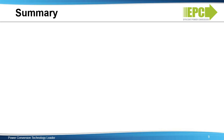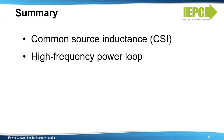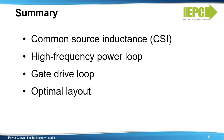The fast switching speeds of GAN devices magnify the impact of parasitic inductances on performance. The focus was on layout techniques and ways to minimize these parasitics. Common source inductance, power loop inductance, and lastly gate loop inductance were addressed. Finally, an example of optimal layout was shown that can be implemented to realize the maximum performance of EGAN FETs.